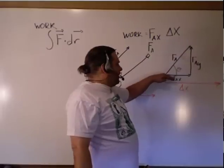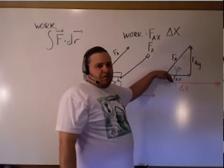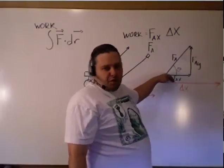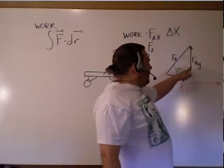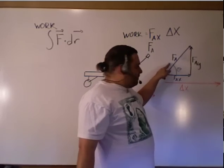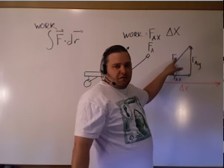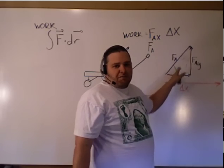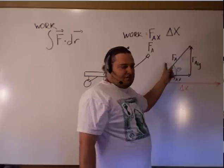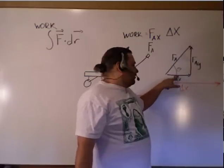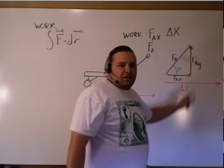Well, SOHCAHTOA, sine, cosine, tangent. Sine being opposite over hypotenuse, cosine being adjacent over hypotenuse, and tangent, which is opposite over adjacent. Well, because, you know, we don't like tangent. Tangent's kind of a dumb function. We're going to use cosine. So we're going to concentrate on this.